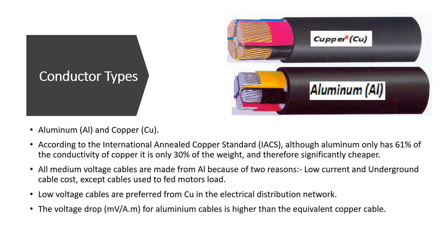The voltage drop for aluminum cables is higher than for copper because aluminum has lower conductivity, higher resistivity, and higher resistance. Voltage drop in cables is measured in millivolts per ampere per meter. To find the total voltage drop in a cable, multiply this value by the rated current absorbed by the load and by the cable length.